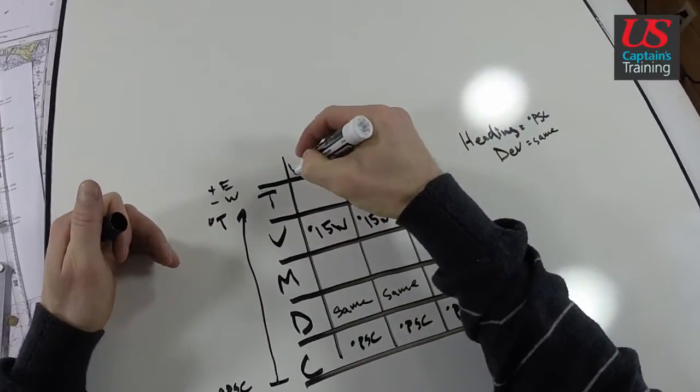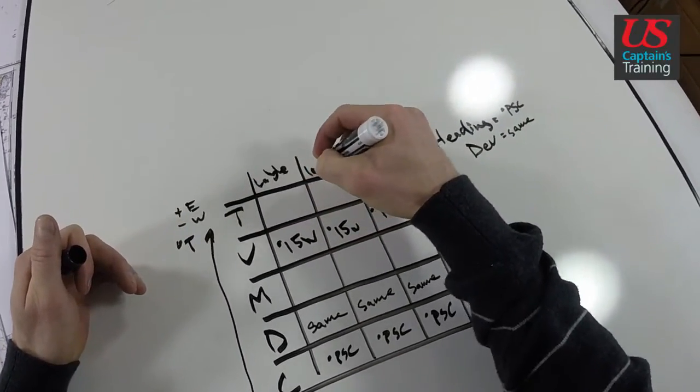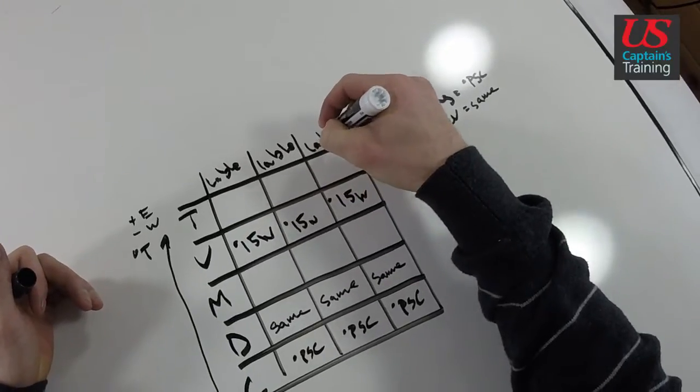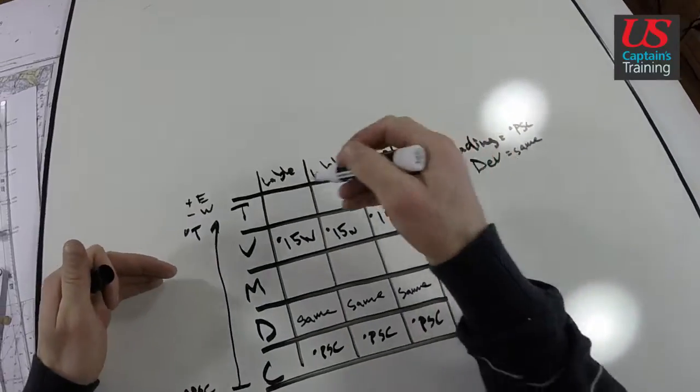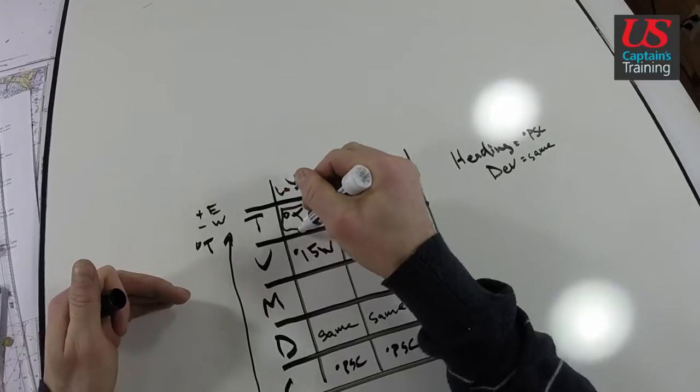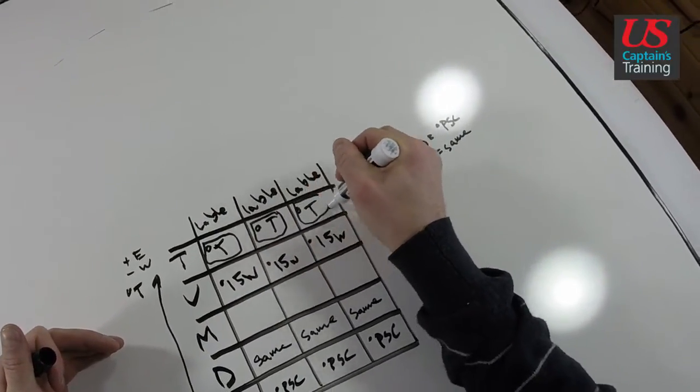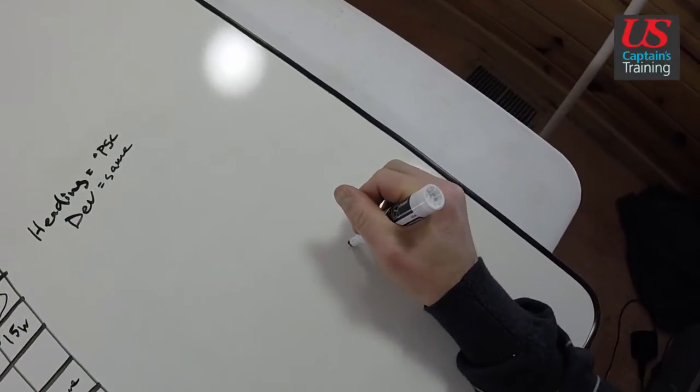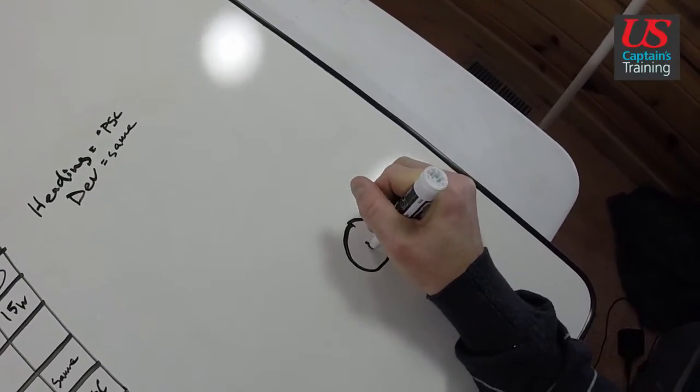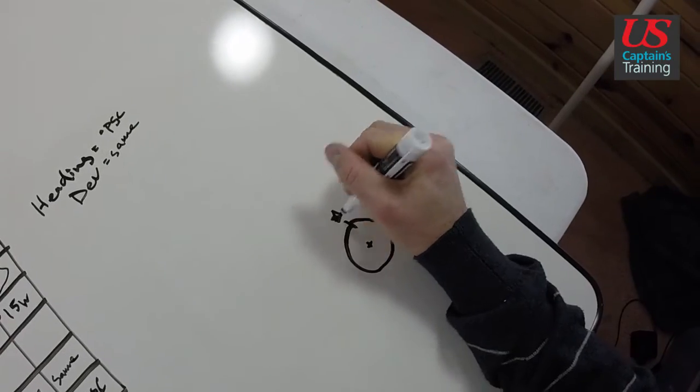This is where you label all these. Now we get all these degrees true, and we can plot degrees true on our chart because we have a compass rose. The compass rose is at the center and is in true degrees.